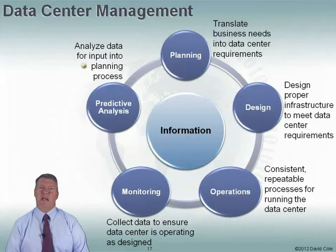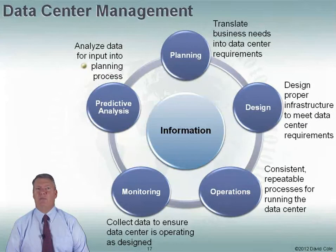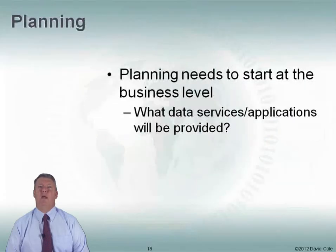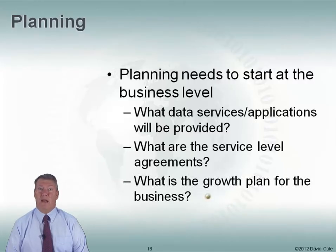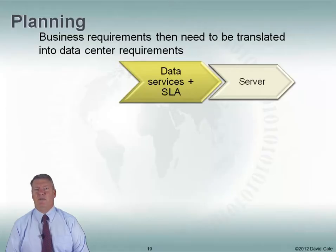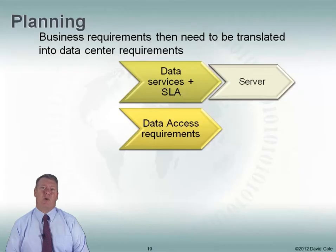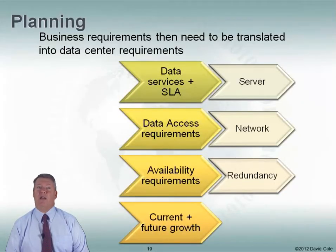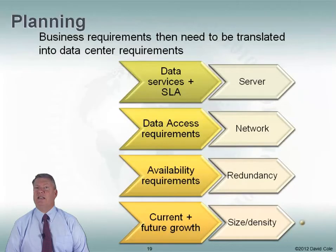What's important to know is that in the middle of that circle is information. We need everyone to have a single source of truth. If the planning group is using one piece of information, the monitoring group another, and operations using something else, we're going to have a hodgepodge of information. On the planning side, planning always starts at the business level — what applications are we going to provide, what are my service level agreements, what's my growth plan? The planning side is about translating these into data center requirements. Services and SLAs help define what kind of service I need; data access requirements help define my network requirements; availability requirements help define what kind of redundancy I need; and current plus future growth helps define the size and density of my data center.